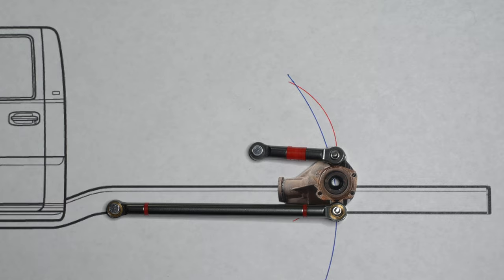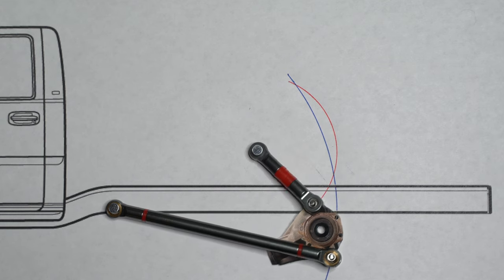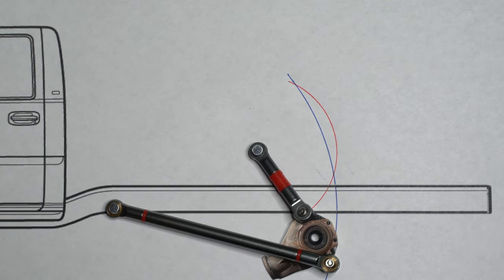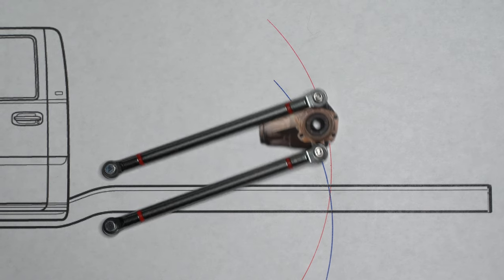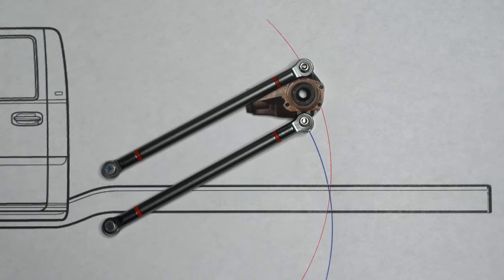In Suspension Basics Part 2, we talked about how link bars of various lengths and angles affect the components that are attached to them. More specifically, how non-parallel or uneven length bars cause pinion angle or camber to change, and equal length parallel bars keep all angles consistent.